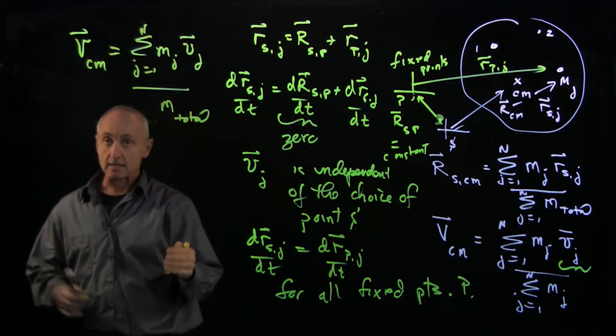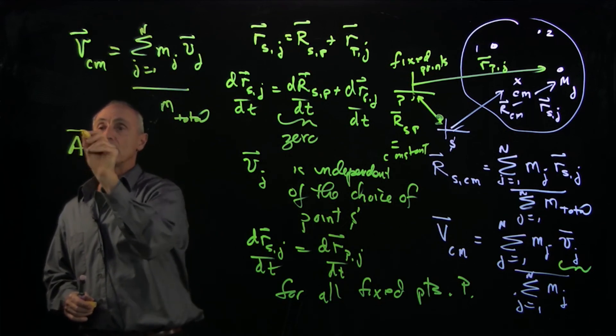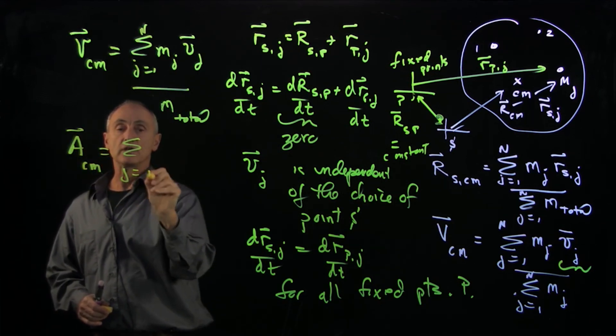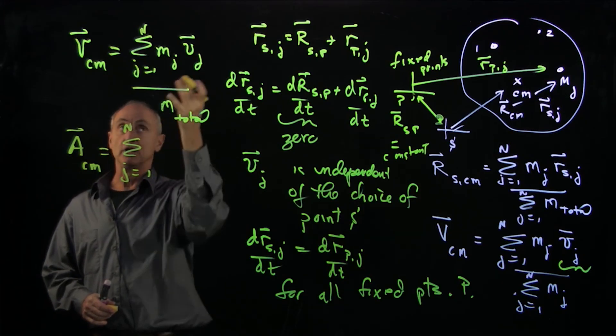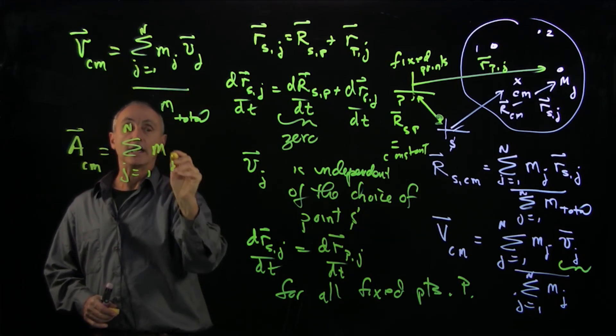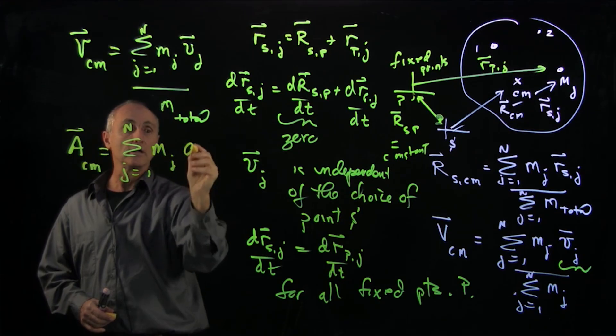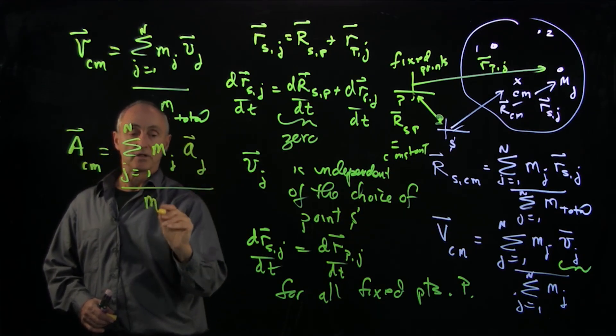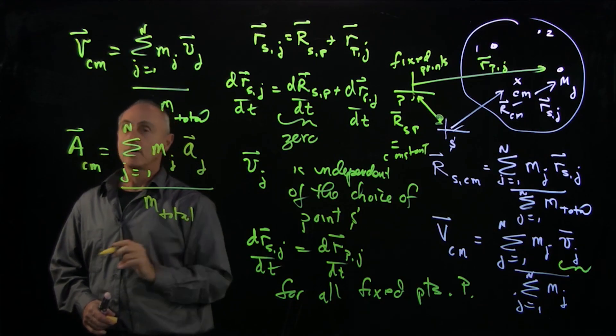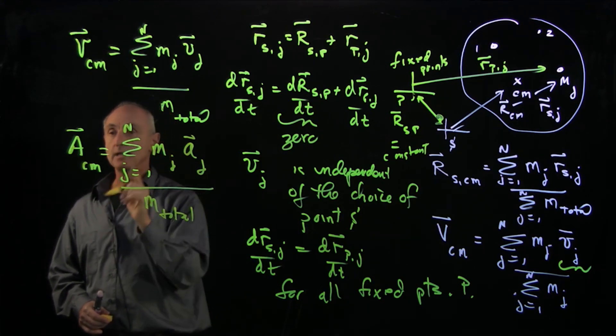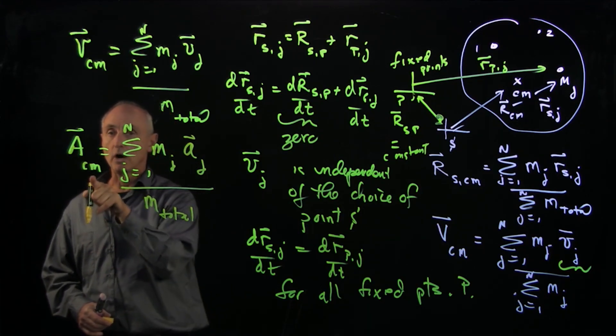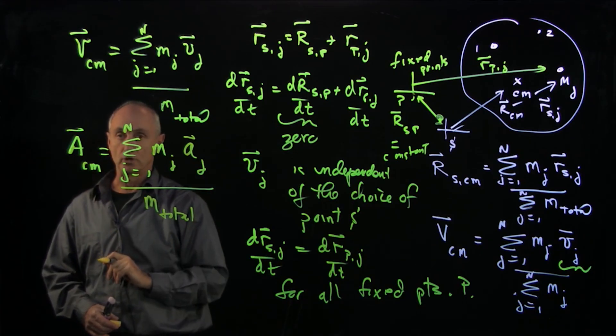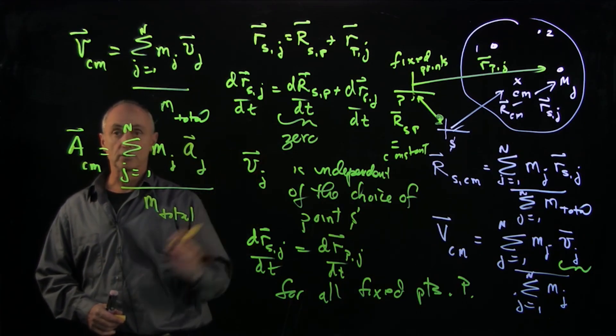Now what's interesting here is why is this an important quantity? Let's just add that if we want to talk about the acceleration of the center of mass, I do exactly the same type of calculation. I just differentiate. And I get the mass of the j-th particle times the acceleration of the j-th particle divided by the total mass. And our next step is to understand why this is an important quantity for a system of particles.